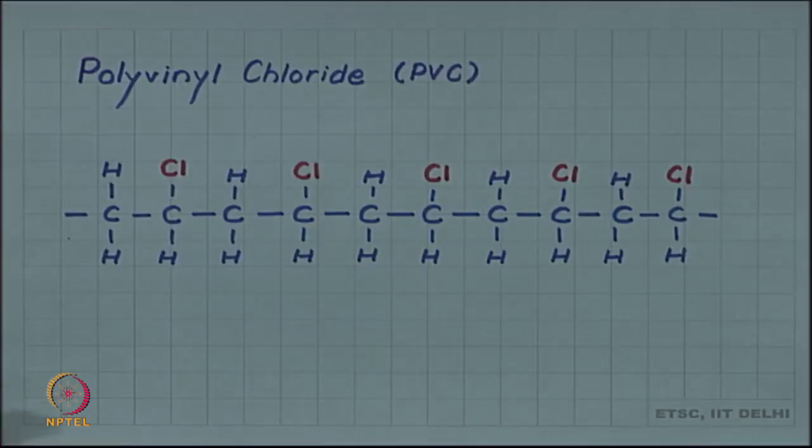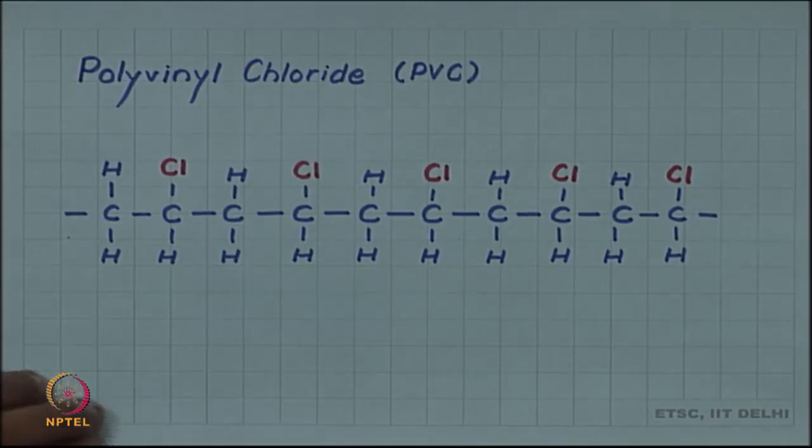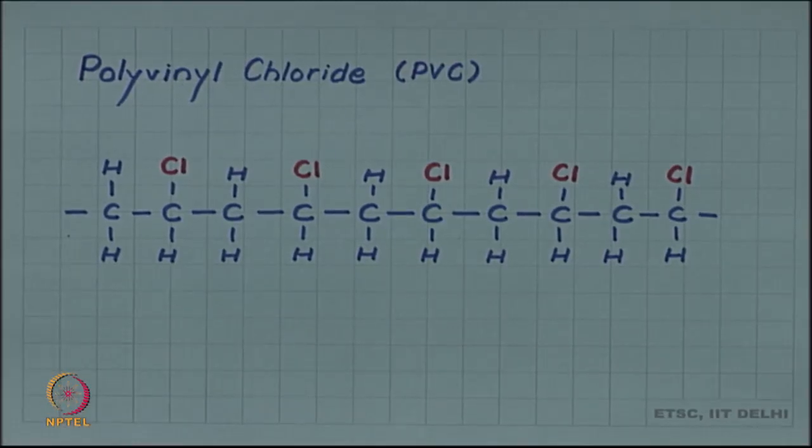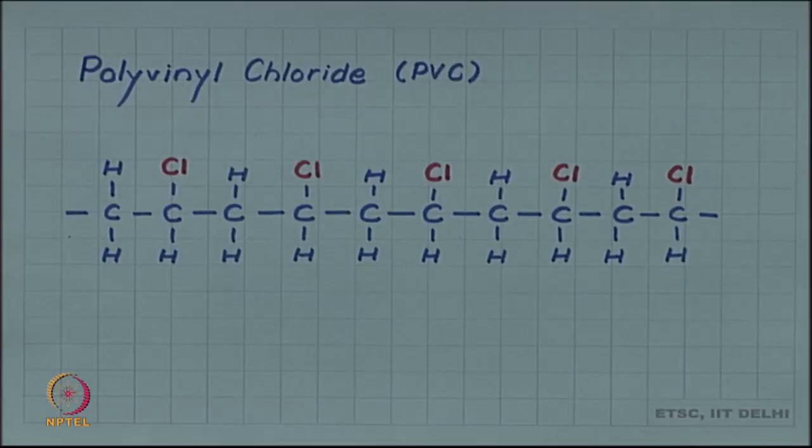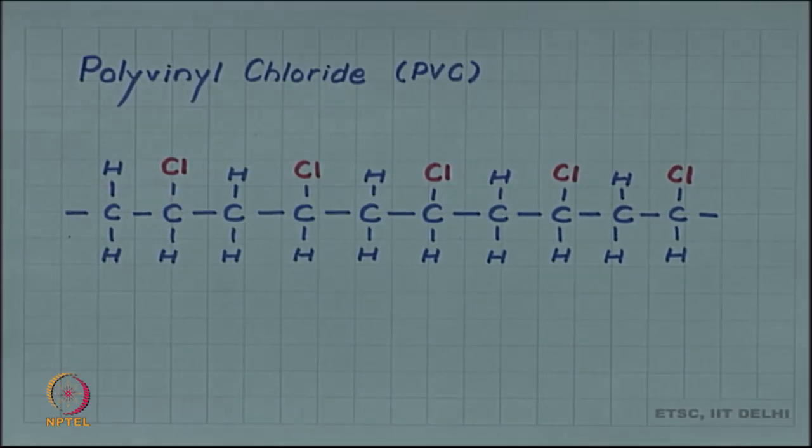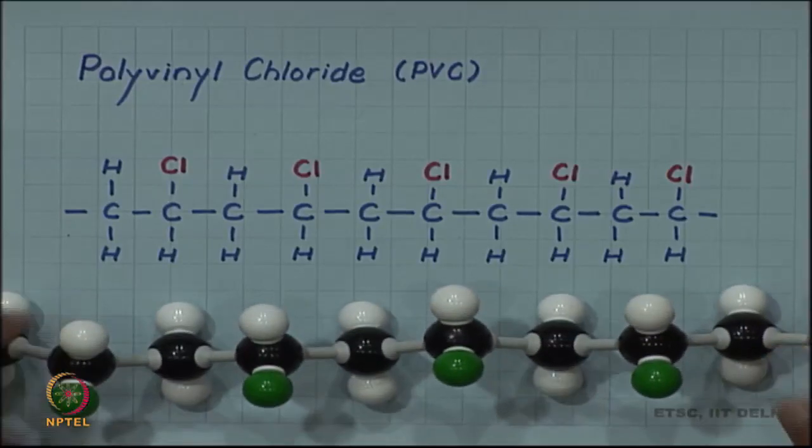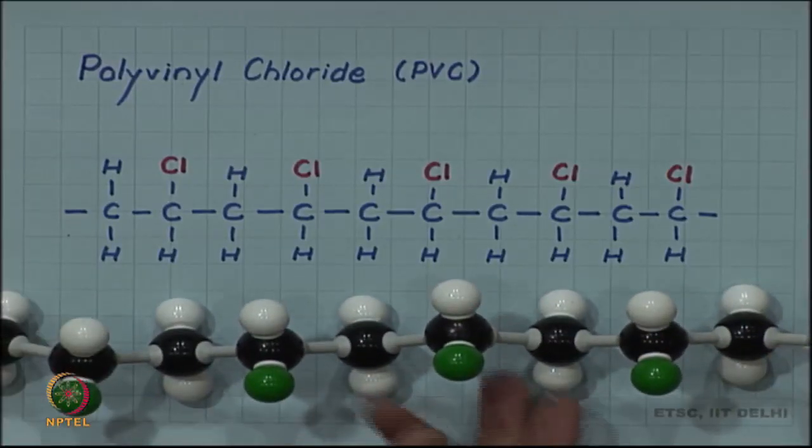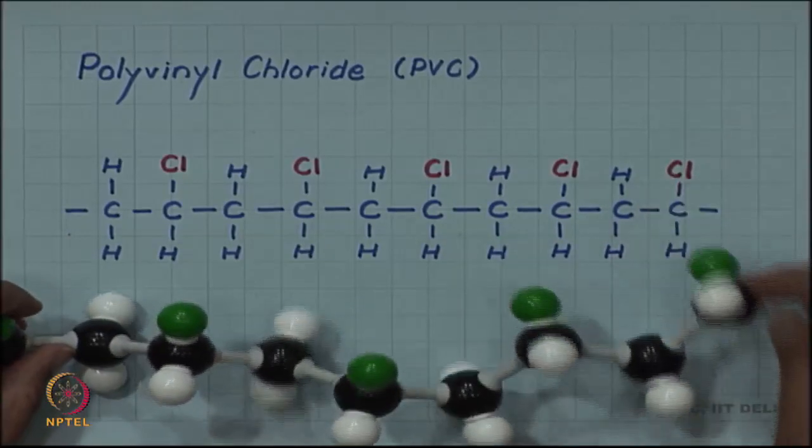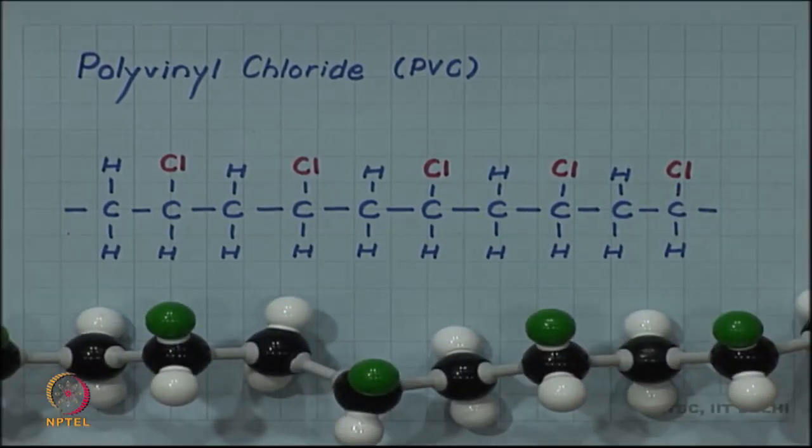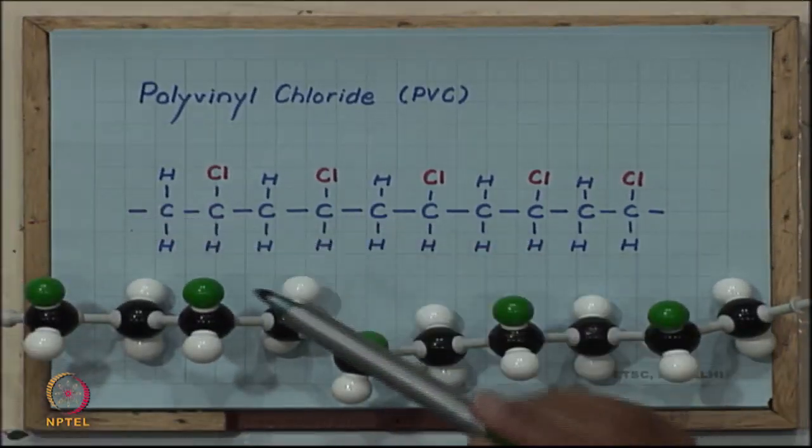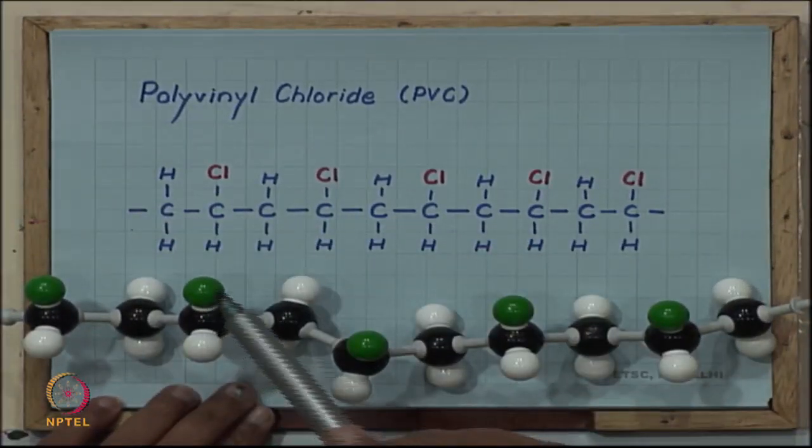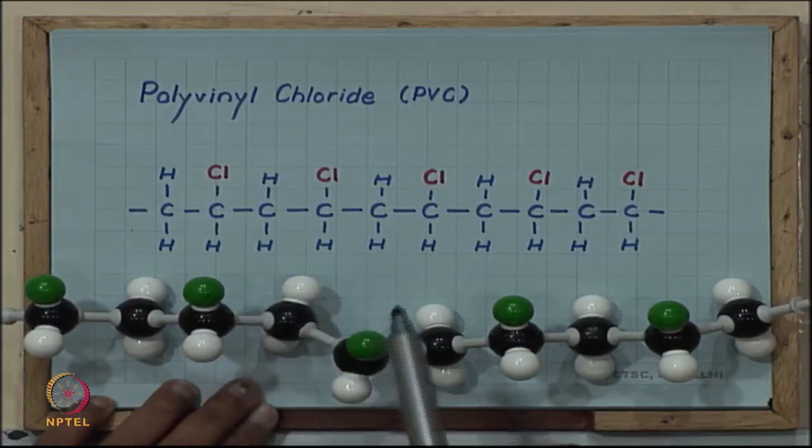Let us consider polyvinyl chloride. In polyvinyl chloride, I have a molecule here. We can see that the way I have made the model or drawn the structure, all chlorine atoms are appearing on alternate carbon atoms.